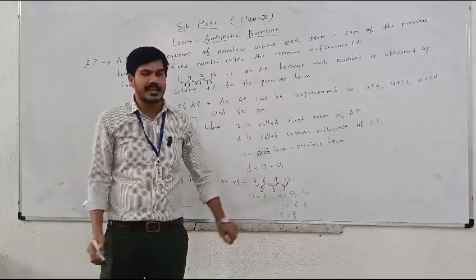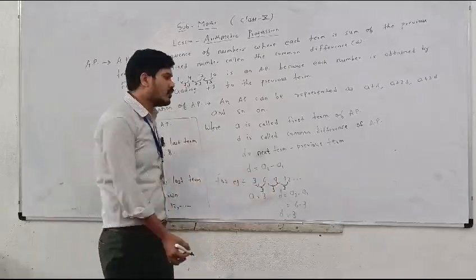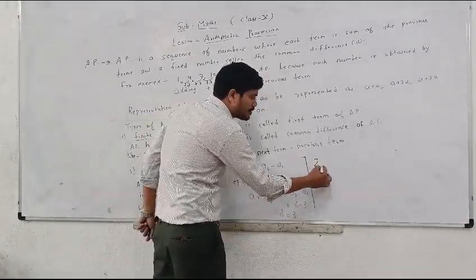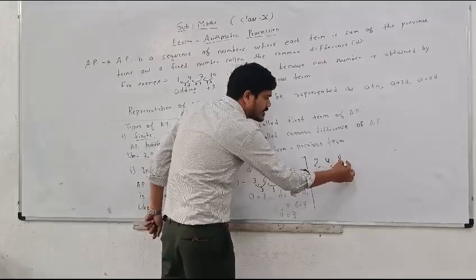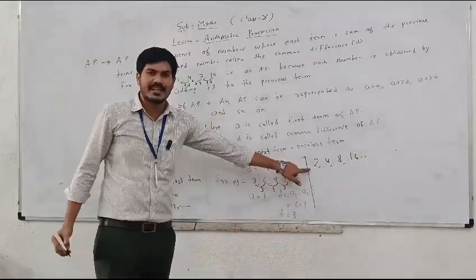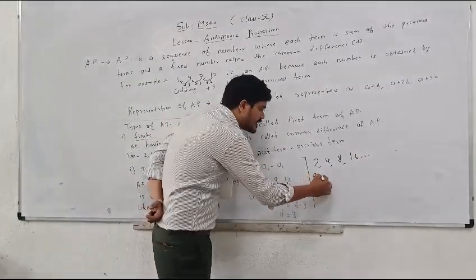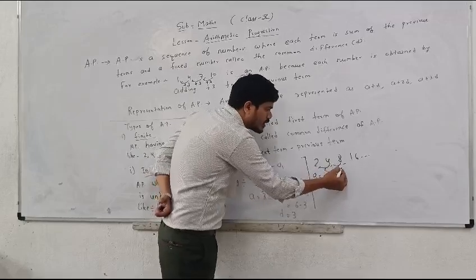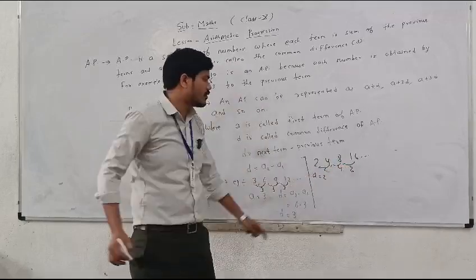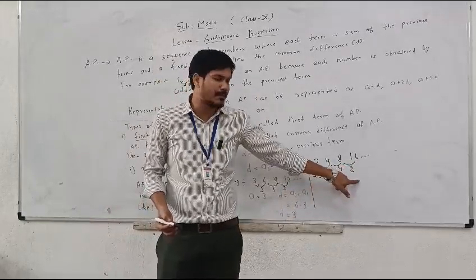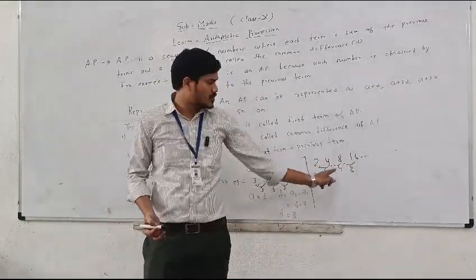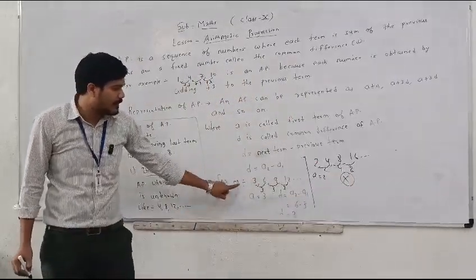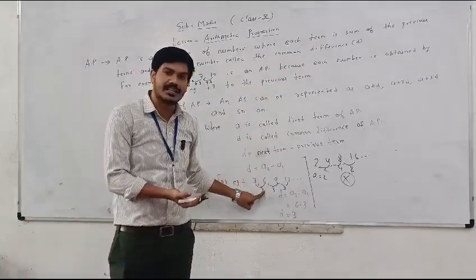Which series cannot be called an AP? For example, I have written here 2, 4, 8, 16. Here the first term is 2, but the difference between the numbers varies. Here it is 2, here it is 4, and here it is 8. We are not getting equal difference between the numbers, so this is not an AP. For AP, there should be equal gap between the numbers in the sequence.